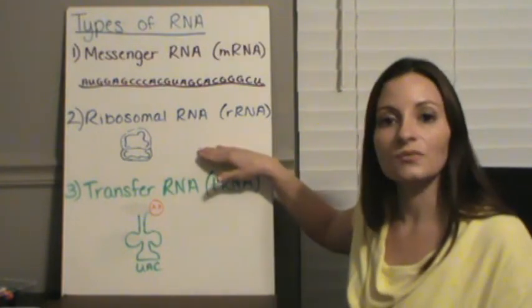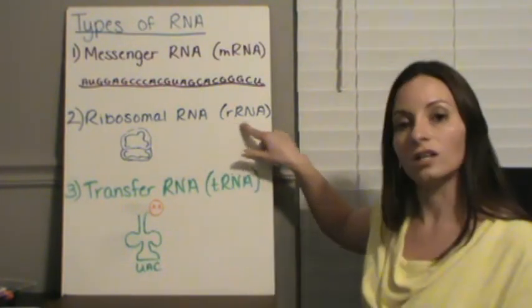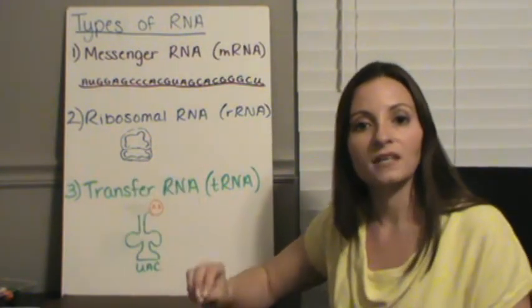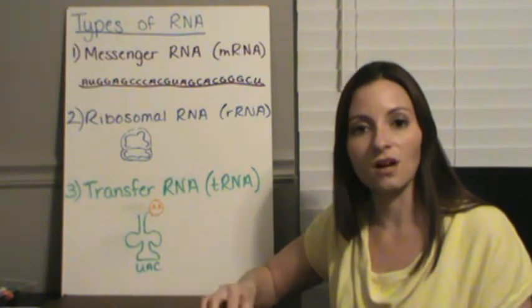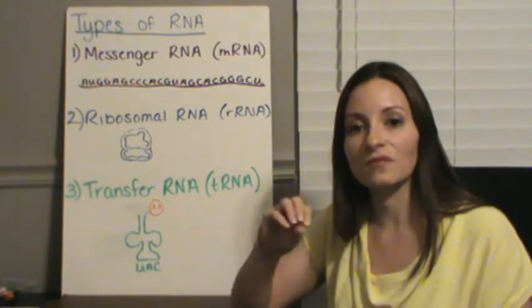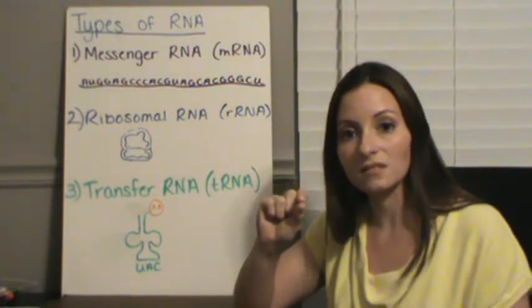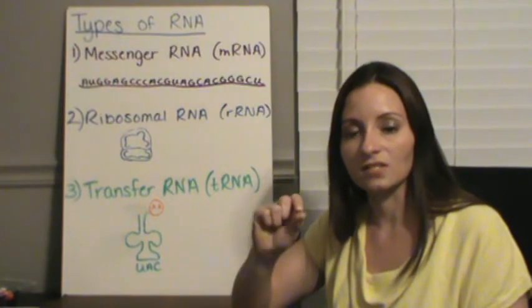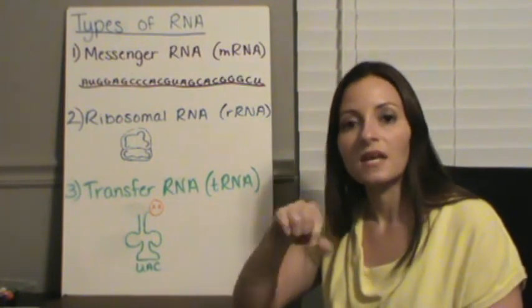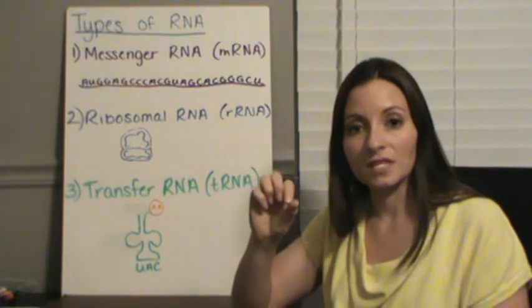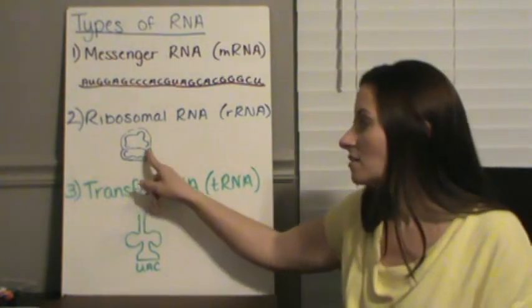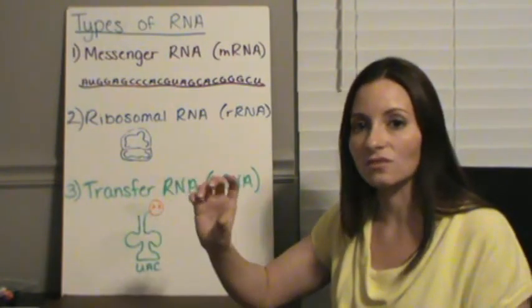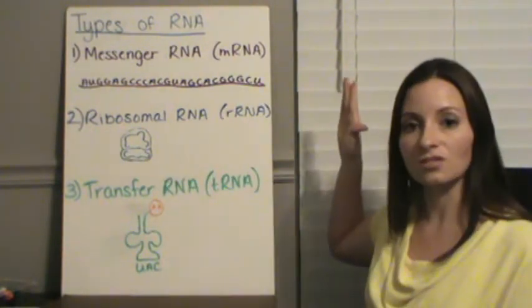The second one is ribosomal RNA, we'll refer to that as rRNA, and it's actually what makes up the ribosomes. Back in our section talking about the parts of a cell, you know ribosomes are referred to as those little tiny dots within the cell that you'll see them as. They're just little tiny dots because they're so small and they make proteins. What they are is actually two clusters of RNA together, two small strands.